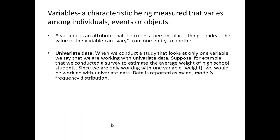When we conduct a study that looks at only one variable, we say that we're working with univariate data. For example, if we conducted a survey to estimate the average weight of high school students, since we're only working with one variable — weight — we would be working with univariate data. This data would be reported as mean, mode, and frequency distribution.